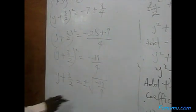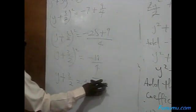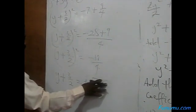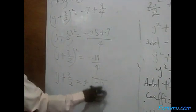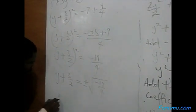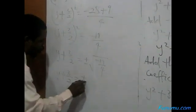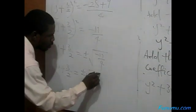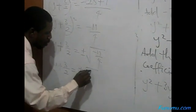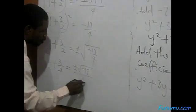From here we can find the square root of 4, though we cannot find the square root of minus 19. So Y plus 3 all over 2 equals plus or minus square root of minus 19, all over 2.